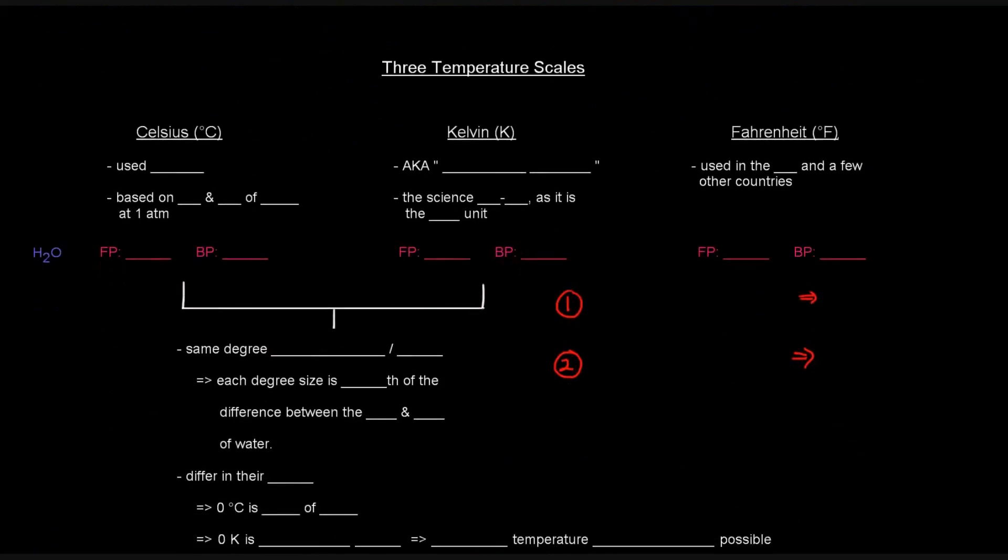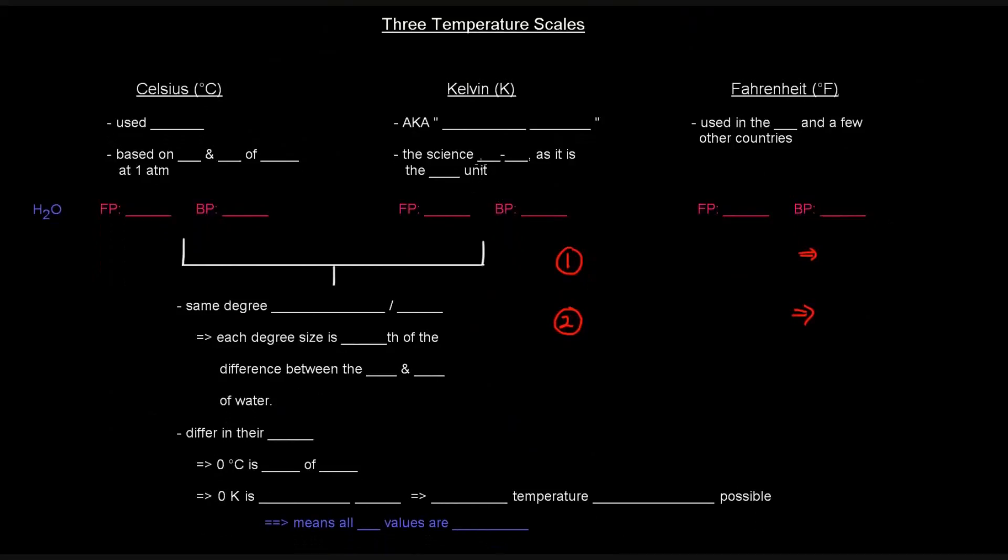On to something else that's definitely important: the three temperature scales that are used. And they are degrees Celsius, Kelvin, and degrees Fahrenheit. Notice that there is the little degree symbol for Celsius and for Fahrenheit, but there isn't one for Kelvin. We don't say degrees Kelvin, we just say Kelvin. So if something is 400 Kelvin, we say 400 Kelvin, not 400 degrees Kelvin.